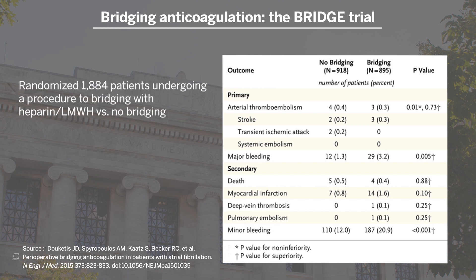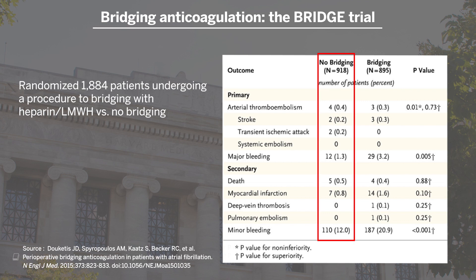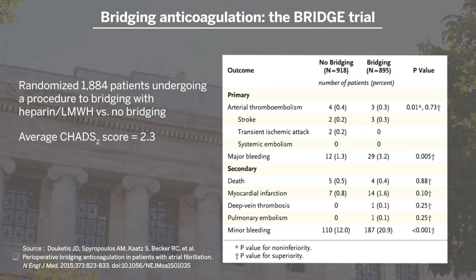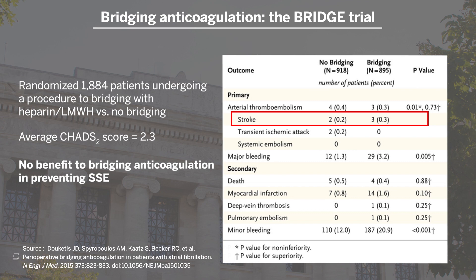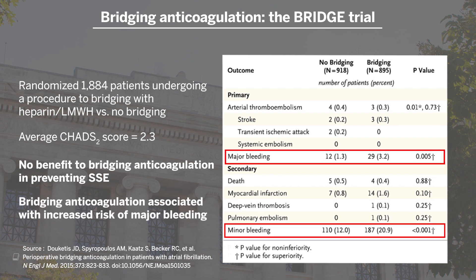In the BRIDGE trial, patients undergoing a procedure were randomized to bridging anticoagulation with a heparin product versus no bridging — just stopping warfarin for five days before the procedure and then restarting. The trial used the CHADS-2 score, and the average score was 2.3. With patients at moderate risk for stroke, they found no benefit to bridging anticoagulation in terms of preventing stroke or systemic embolism, but bridging was associated with more major and minor bleeding events. So bridging anticoagulation may have caused some harm and did not prove helpful — though keep in mind these were relatively low CHADS-2 score patients.